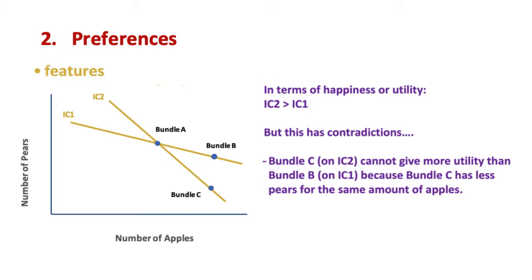Bundle A at the intersection point is also problematic. This bundle represents the same utility level as bundle B and C, but that's not possible if B and C represent different utilities. Therefore, indifference curves cannot intersect.